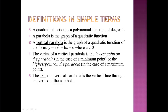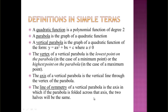The axis of a vertical parabola is the vertical line through the vertex. The axis also has an interesting feature — it is a line of symmetry. With the line of symmetry, when you fold the parabola across that axis you have identical halves: one side is similar to the other side.